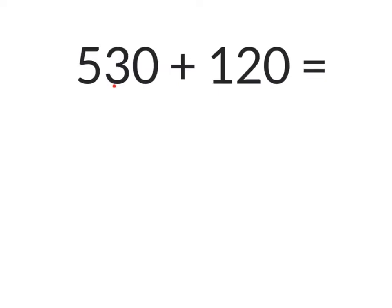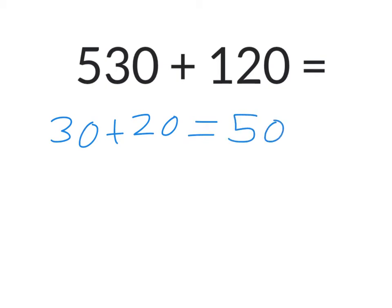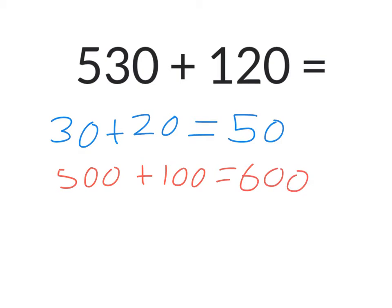The first thing I'm going to look at is the tens column and adding them together, so I'm going to go 30 plus 20. And I know that 30 plus 20 equals 50. Now I'm going to add my hundreds column together. 500 plus 100 equals 600, plus the 50 that I've already added for my tens. So 600 plus that 50 equals 650.